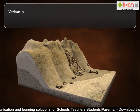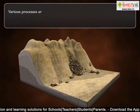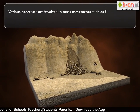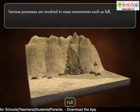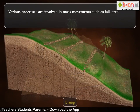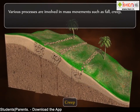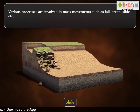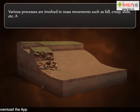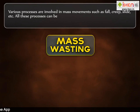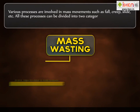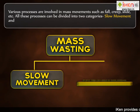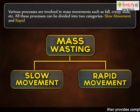Various processes are involved in mass movements such as fall, creep, slide, etc. All these processes can be divided into two categories: slow movement and rapid movement.